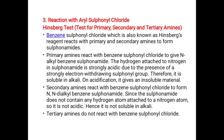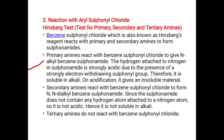Primary amines react with benzene sulfonyl chloride to give N-alkyl benzene sulfonamide. The hydrogen attached to the nitrogen atom in this sulfonamide is strongly acidic due to the presence of the strongly electron-withdrawing sulfonyl group. Therefore, it is soluble in alkali, and on acidification gives an insoluble material.